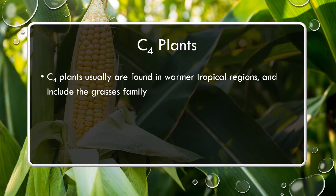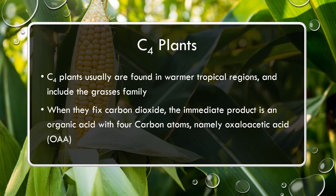C4 plants are found in warmer, more tropical regions and include the grasses family - those long monocot leaves. Corn, visible in the background, is one such C4 plant. When they fix carbon dioxide, the intermediate product is a four-carbon molecule: oxaloacetic acid, or OAA for short - that's what's produced in the C4 process.